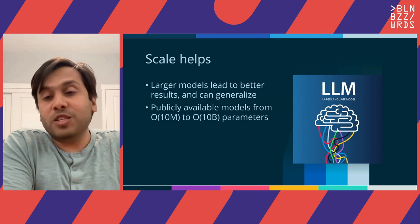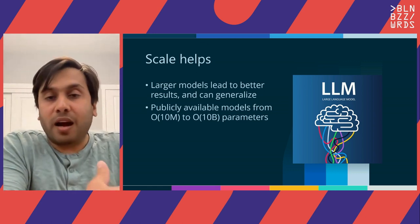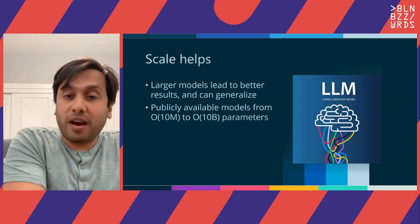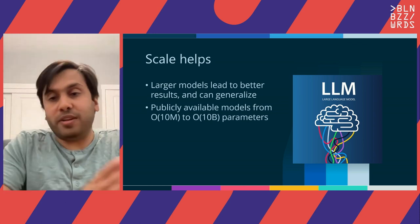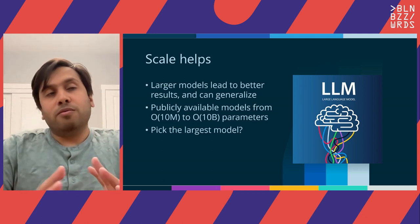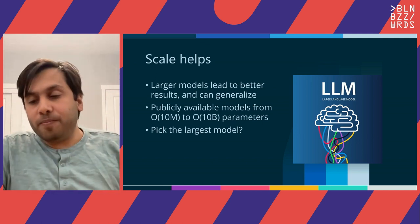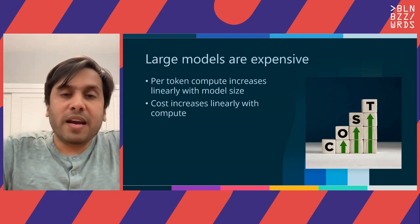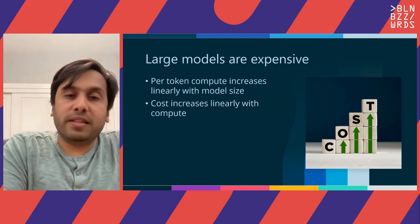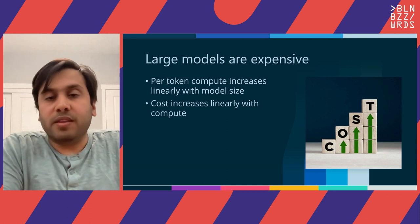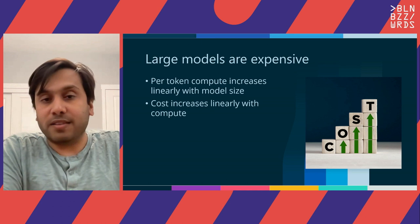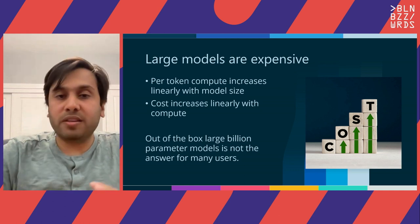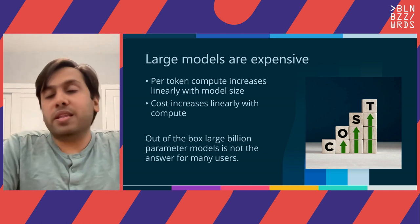A good heuristic — which at this point has almost become a fact — is that scale helps. Large models trained on large datasets lead to better results, and they can also generalize pretty well on different domains. There are publicly available models all the way from 10 million parameters to 10 billion parameters and even more. One idea would be to just pick the largest model and call it a day. Well, that would have been a good strategy, but unfortunately large models are quite expensive, because the amount of compute required increases with the size of the model.